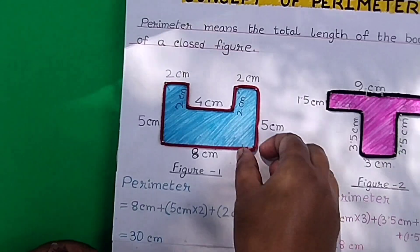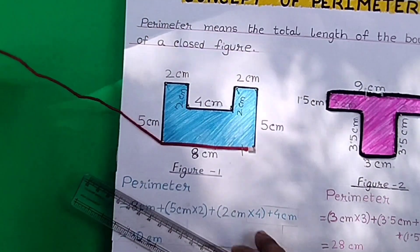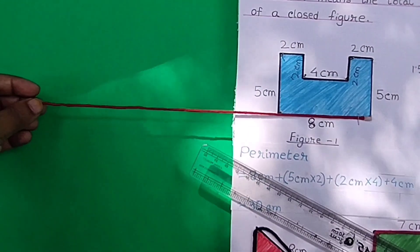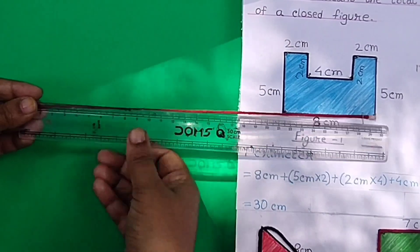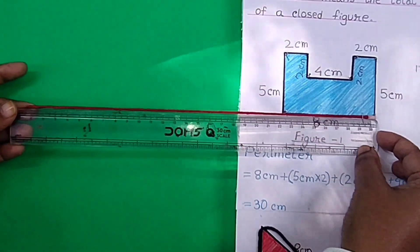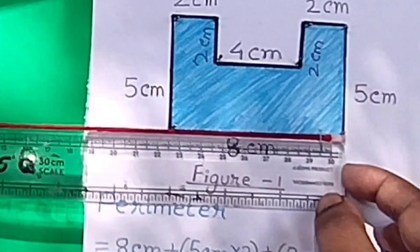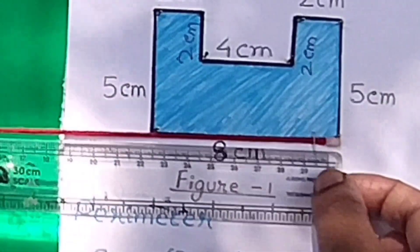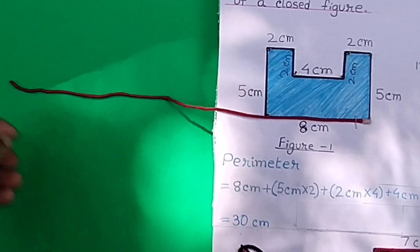We can check it with the help of this thread. Let's put one side of the thread at one, and we can see that the other side is at 30. That means the total length of the boundary of figure one is 30 centimeters.